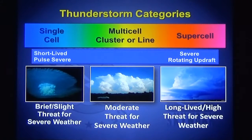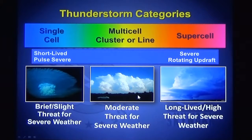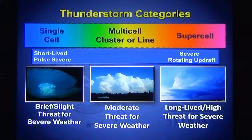Thunderstorm categories include: single cell — one thunderstorm; multi-cell — a group of thunderstorms that can cluster or line up. In a multi-cell cluster, there are separate areas of upward motion, for example three thunderstorms making a multi-cell cluster. And then there's the supercell, which is the most dangerous, encouraging severe weather — large hail, high wind, flash flooding, and tornadoes. What makes a supercell a supercell is that the updraft in the storm is actually rotating. When you look up at a supercell thunderstorm, it can look like the whole storm is rotating, and indeed it can be.